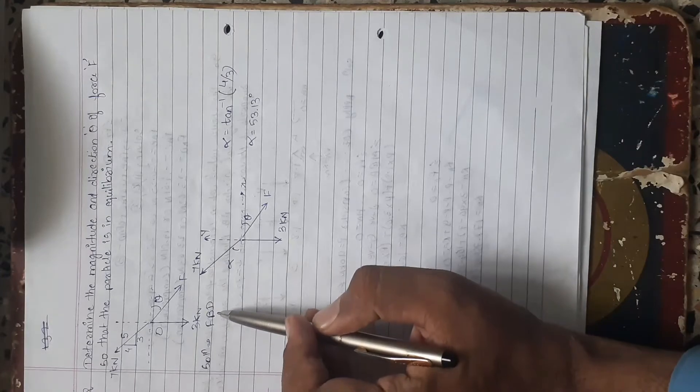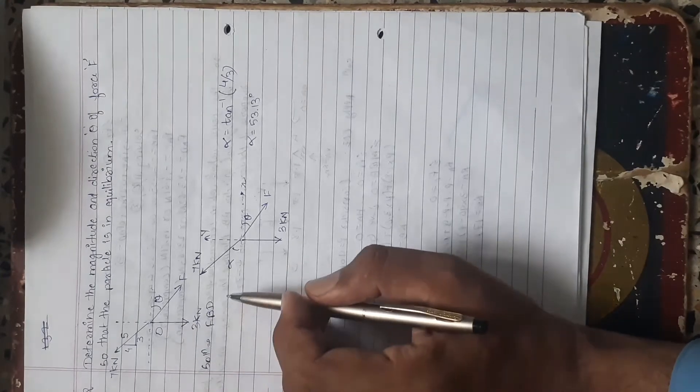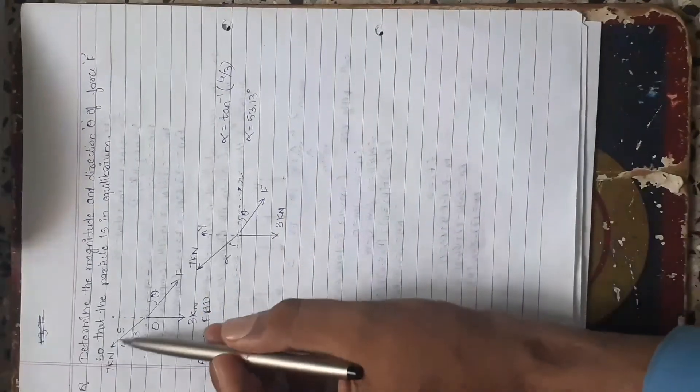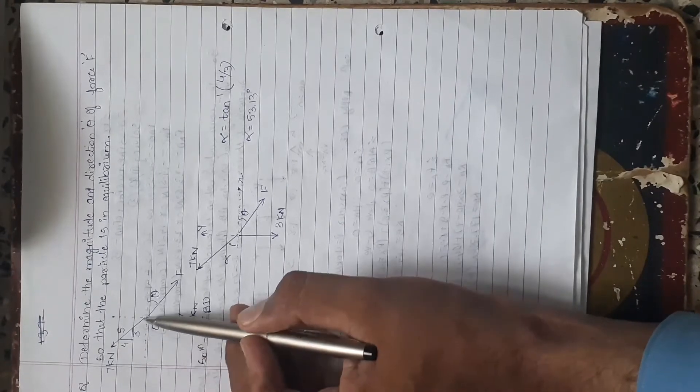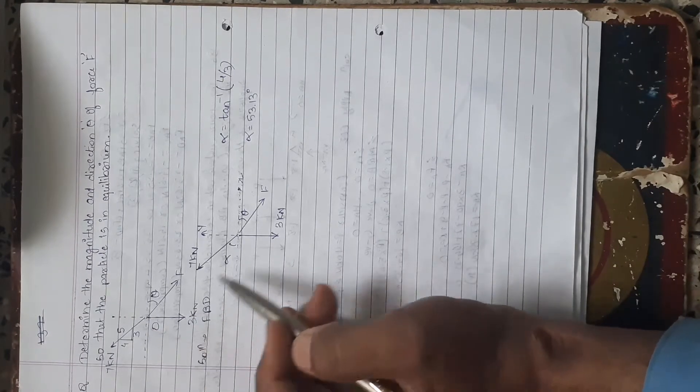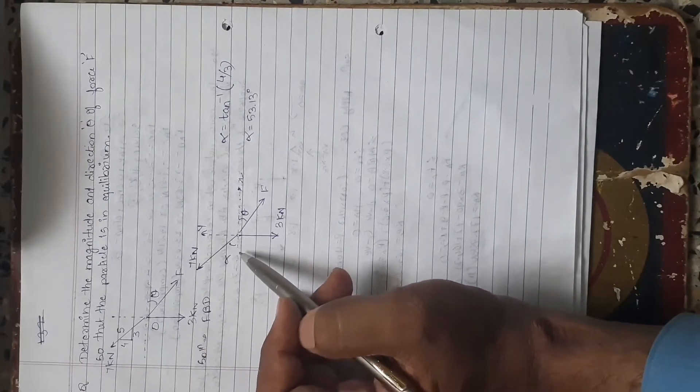Let's see the free body diagram of point O. Now first we have to find out its angle made by 7kN with the horizontal. Let us assume as angle alpha.